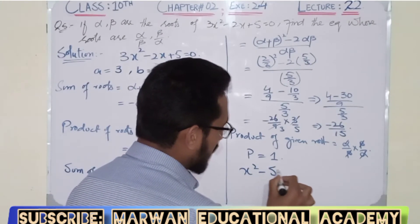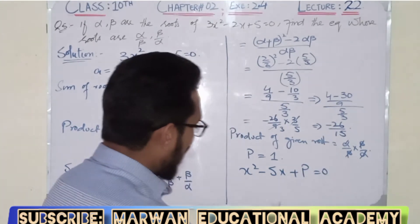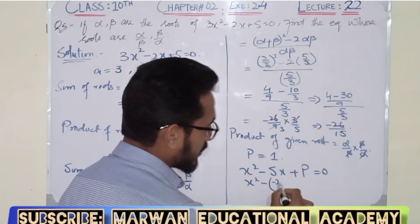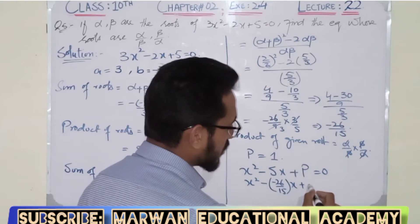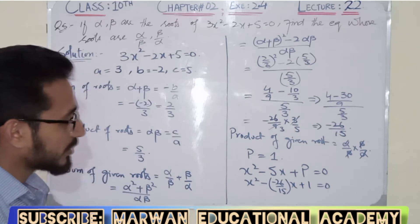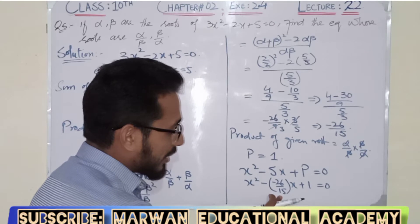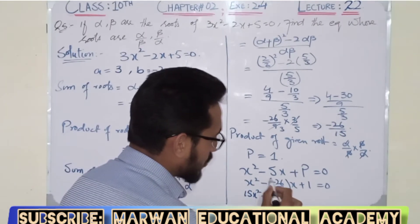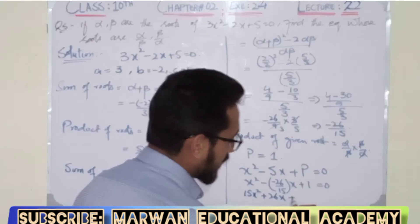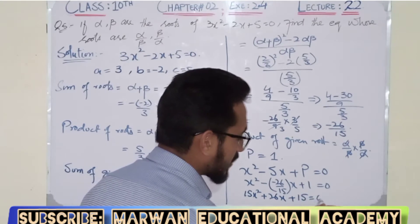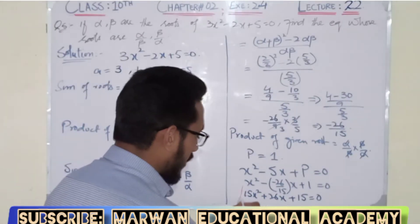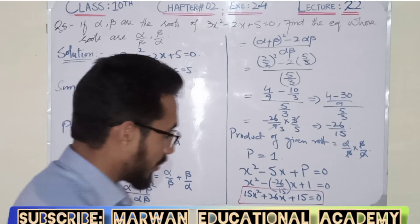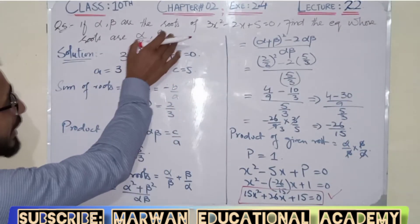Using the formula from previous lecture: x squared minus sum of roots times x plus product of roots equals 0. Substituting the sum of roots value of minus 26 over 15 and product of roots value of 1, then multiplying all terms by 15 to clear fractions, we get 15x squared plus 26x plus 15 equals 0.